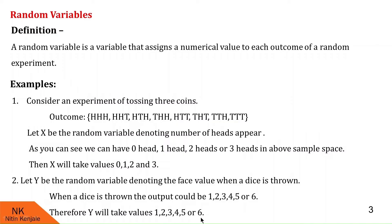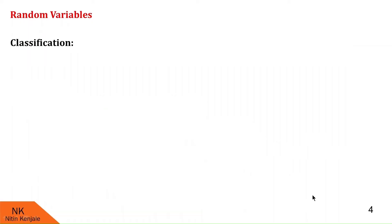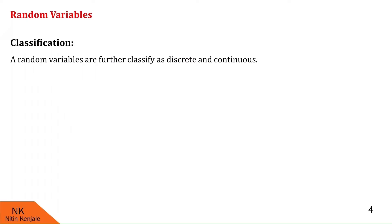I hope you understood the definition of random variables. Now we will proceed to the classification of random variables. Random variables are classified as discrete and continuous.